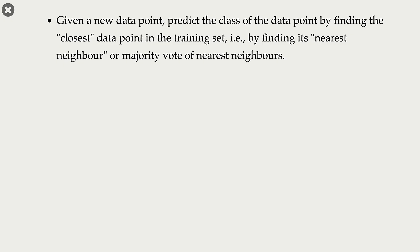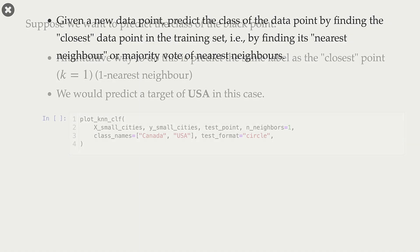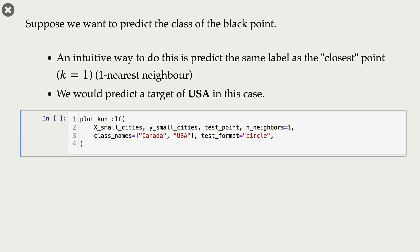Now that we know how to calculate distances between points, and given a query point how to find its closest neighbor, an intuitive way to predict the label of a given query point is finding its closest neighbor and using its label as the label of the query point.